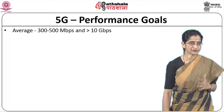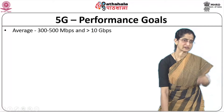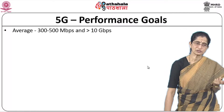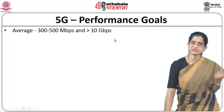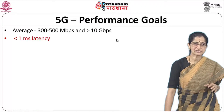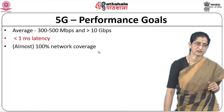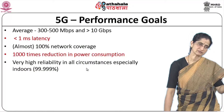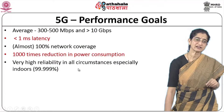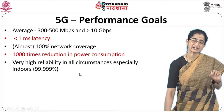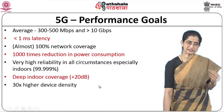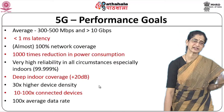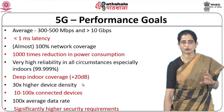Coming to 5G, the performance goals include: average data rates of 300–500 Mbps and greater than 10 Gbps peak; less than 1 millisecond latency; almost 100% network coverage including indoors; 1000 times reduction in power consumption for very long battery life; 99.999% reliability; deep indoor coverage; 30 times higher device density; 100 times more connected devices; 100 times higher average data rate; and significantly higher security requirements.